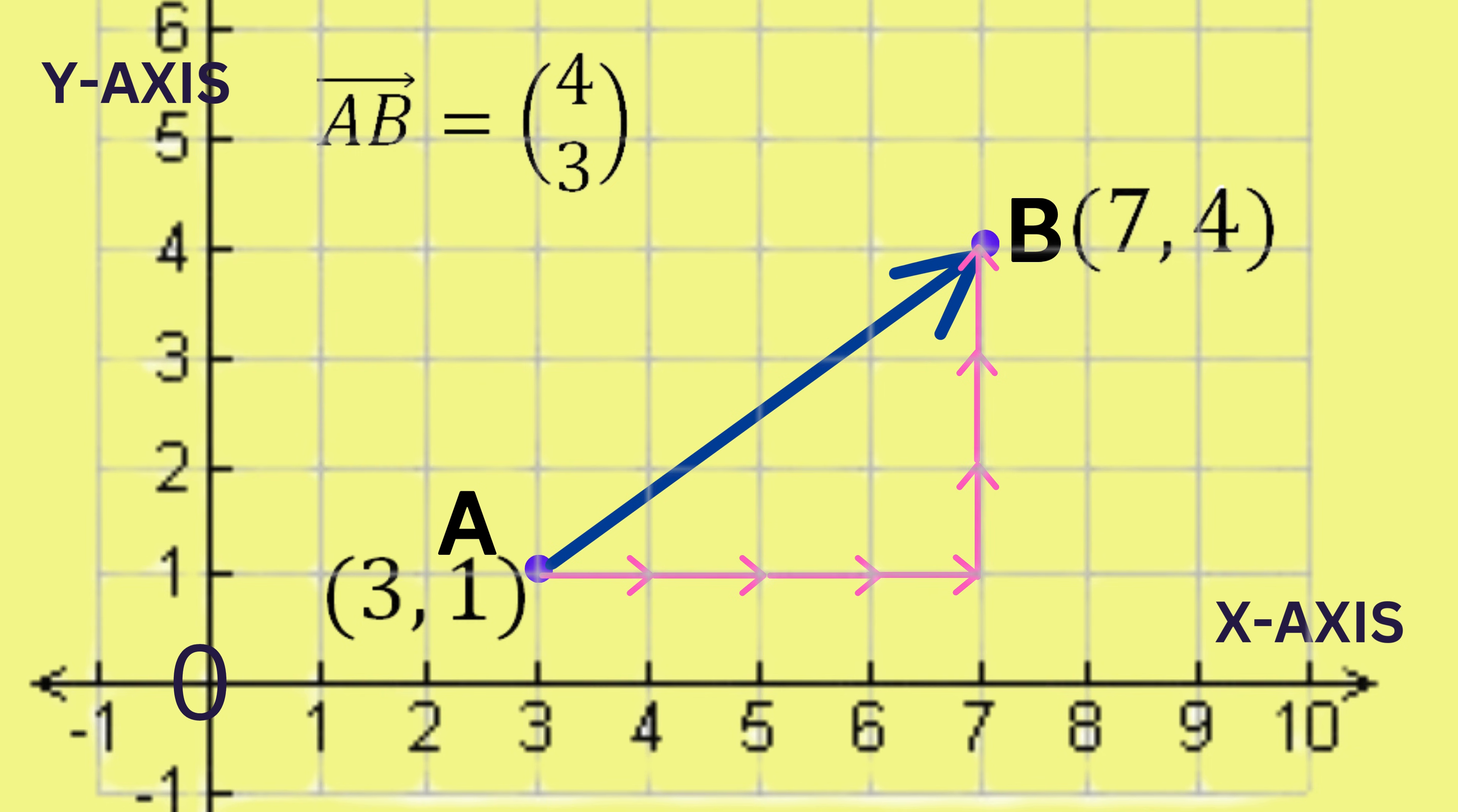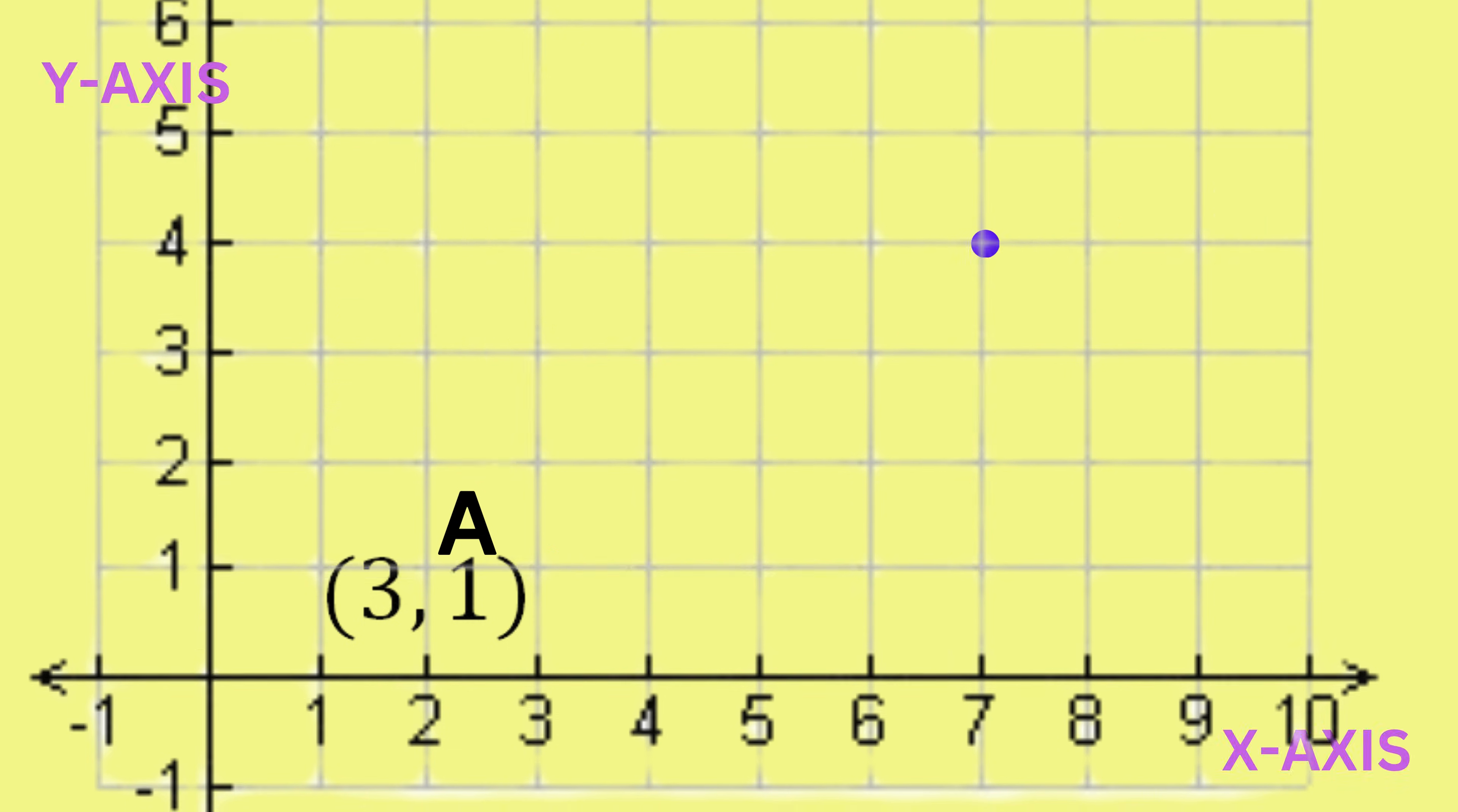Note that we can also get the vector AB by reversing the points and then subtracting. In this case, the vector AB is equal to B minus A. The same values when we manually counted the movement from A to B.